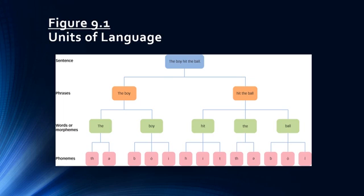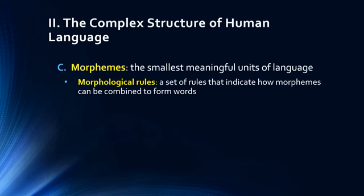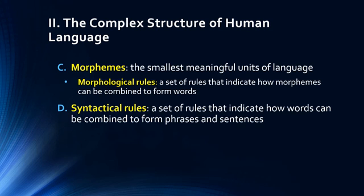This is the basic way in which we understand, produce, and comprehend language. Morphemes are the smallest meaningful units of language, and we have morphological rules — a set of rules that indicate how morphemes can be combined to form words. Syntactical rules are sets of rules that indicate how words can be combined to form phrases and sentences. Every language has different syntactical rules and specific orders in the ways sentences are created, indicating how we can combine words and phrases to make meaningful sentences.